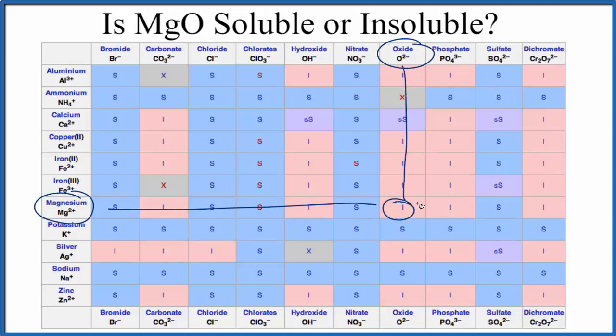You can see all of these I's, metal oxides in general are insoluble. Potassium, that's right here, that's soluble. And then we said sodium, that's right here, that's soluble.